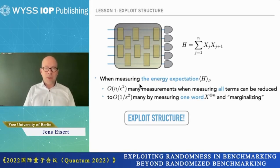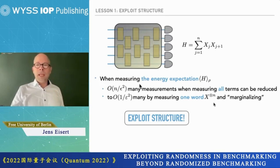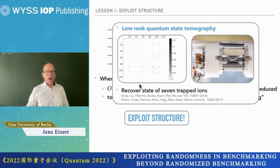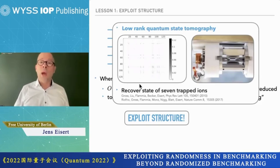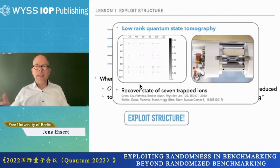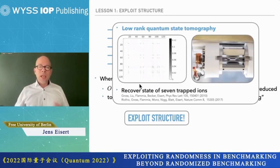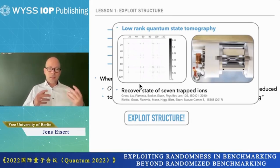There are lots of structures that are interesting and meaningful. In state tomography you're mostly interested in states that are pure or close to being pure, or low rank. We've been thinking a lot about low-rank quantum state tomography over the years, with a lot of mathematical framework being set up. We also joined forces with our friends in Innsbruck to recover the state of a seven trapped-ion system. The upshot is: if you know the state is low rank or pure, you can do much better than in naive settings.